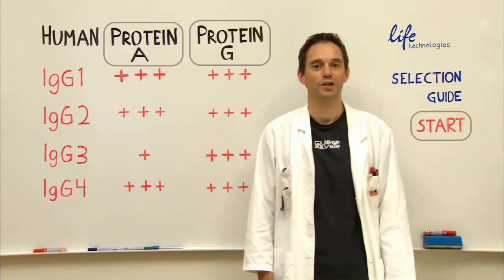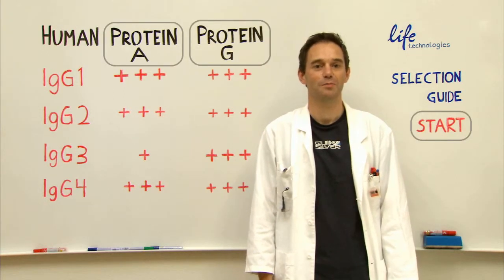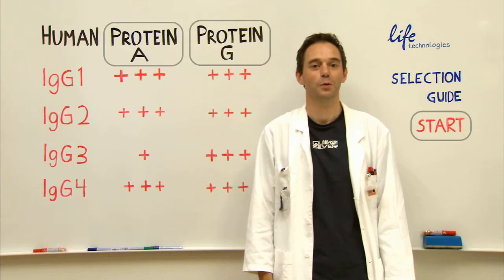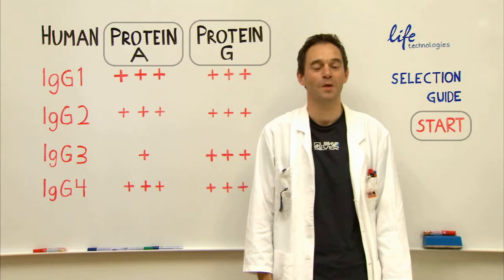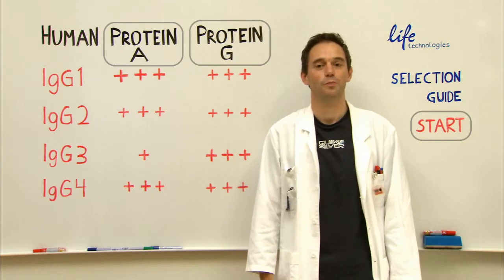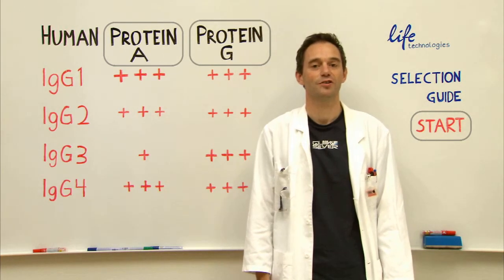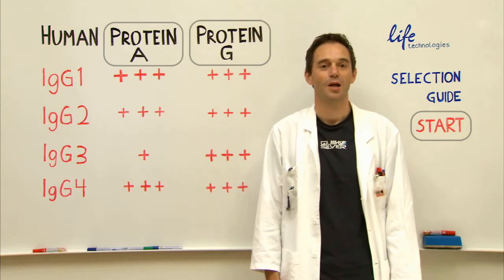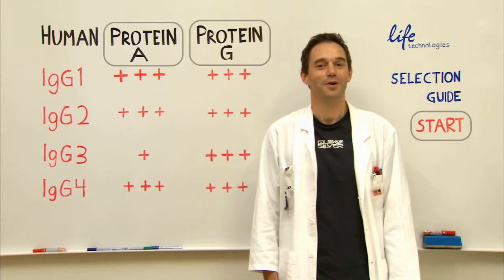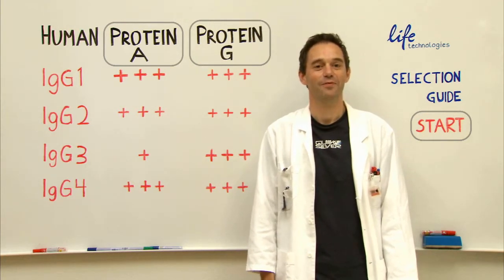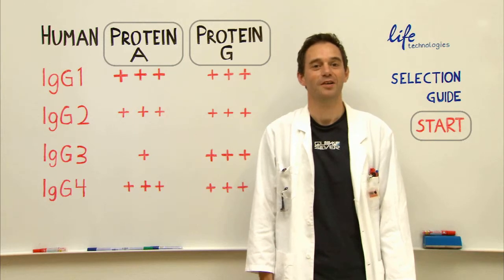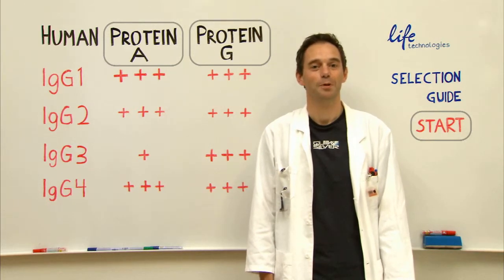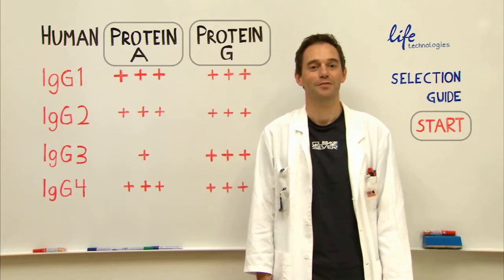From human, both protein A and protein G bind some subclasses with equal affinity. In most cases, protein G will bind a wider range of IgGs with stronger antigen specificity. Another benefit is that protein G doesn't have the albumin binding domain that protein A has, which is convenient if you want to avoid albumin binding and carryover.